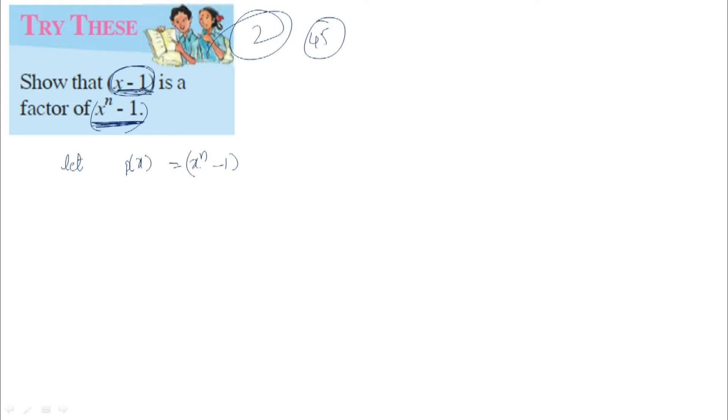Here x-1 is a linear polynomial. x-1 equals 0, first. Find them, and x equals 1. If we divide x^n-1 by x-1 and the remainder is 0, then x-1 will be a factor of x^n-1. So now we have to divide x^n-1 with x-1.